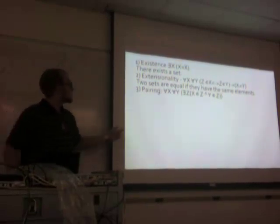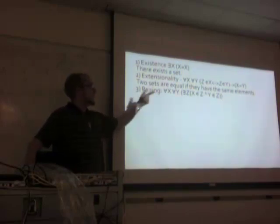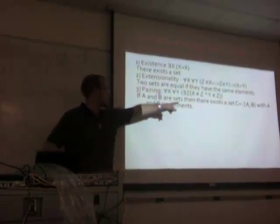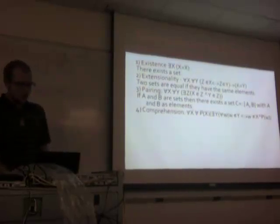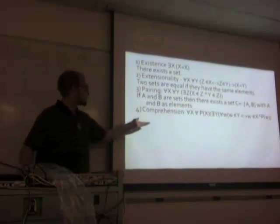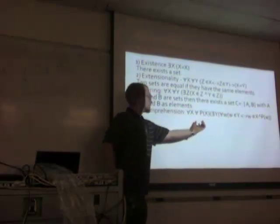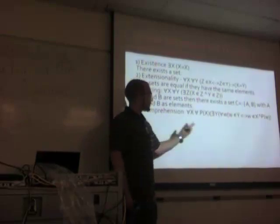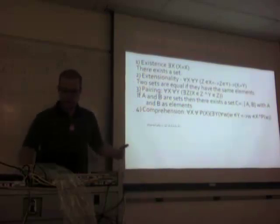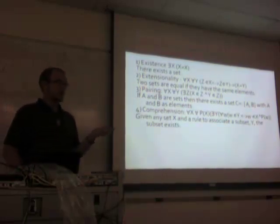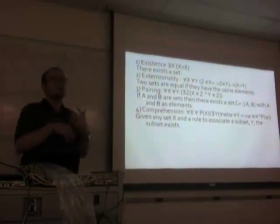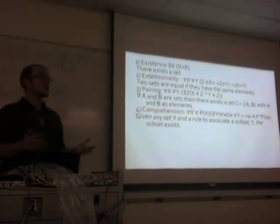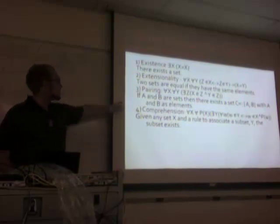Next we have the axiom of pairing: for every x, for every y, there exists a z such that x is in z and y is in z. So if a and b are sets, there's some other set c that contains these, and we use this notation to denote it. The fourth axiom is comprehension: for every x and for every statement P(x) about elements of x, there exists another set y such that for every w, w is in y if and only if w is in x and P is true about w. In more colloquial terms, given a set x and a rule to define a subset, that subset does exist. If you know a set exists, you know all of its subsets exist.